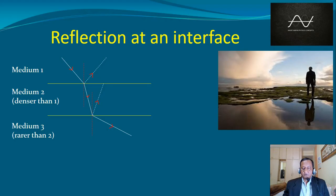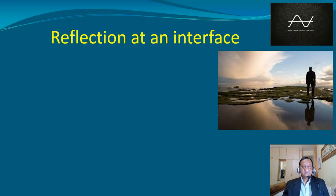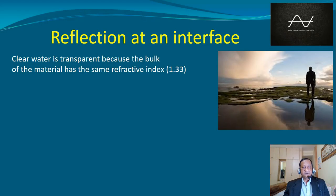So what happens now is, if you look at clear water, it is transparent because the bulk of the material has the same refractive index and some amount of reflection occurs at the interface of course.